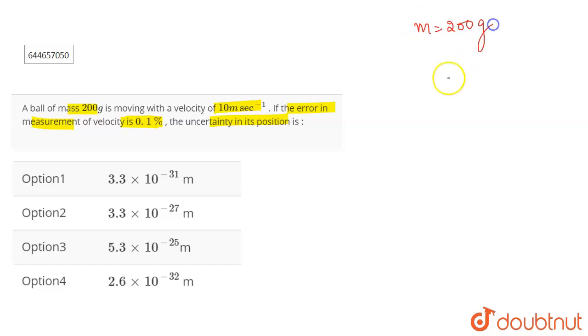as 200 grams, and the velocity is 10 meters per second. Now the error in measurement of velocity is 0.1 percent, so we have to calculate delta v from here. So that will be 0.1 percent, that is 0.1 by 100 of 10. This will be 0.1 percent of the velocity that is given to you.